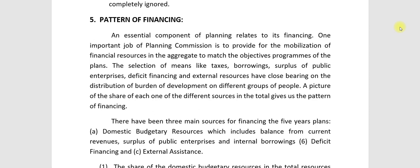There have been three main resources for financing the five-year plans. First: domestic budgetary resources, which includes balance from current revenue, surplus of public enterprises, and internal borrowing.